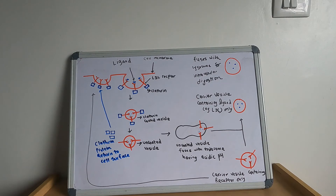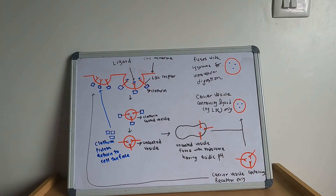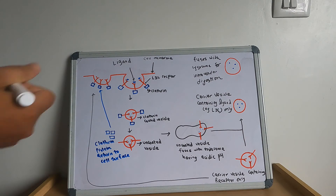Now let us move towards receptor-mediated endocytosis. This is the process in which the cell takes up or internalizes low density lipoproteins, some hormones, antibodies, transferrin, and other specific proteins. The cell membrane contains specific receptors for this process.